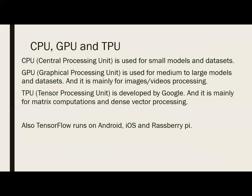CPU, GPU, and TPU: CPU is the central processing unit, used for small models or datasets. GPU, which you may have seen used in gaming, is mainly used for image and video processing and is useful for large models and medium datasets. TPU — Tensor Processing Unit — was developed by Google and is mainly for matrix computations and dense vector processing. It's heavy to learn now, but it's necessary to know it exists and was developed by Google. TensorFlow also runs on Android, iOS, and Raspberry Pi.